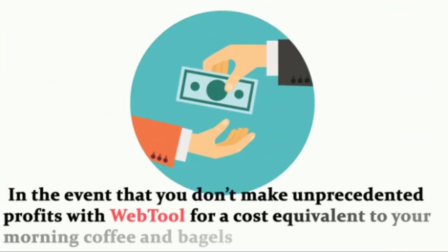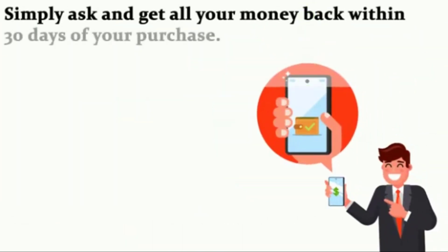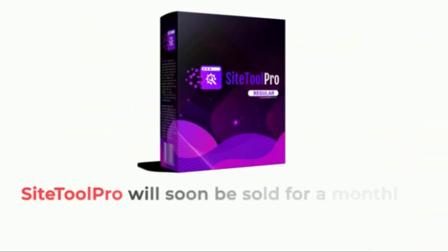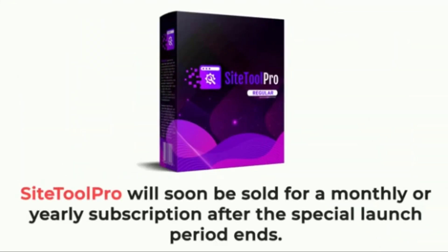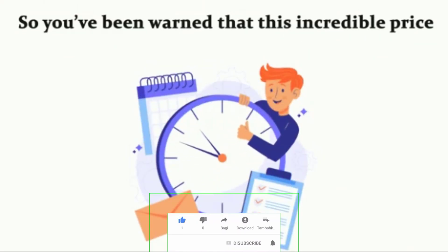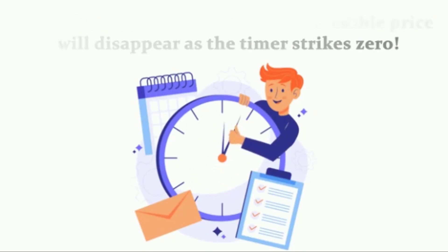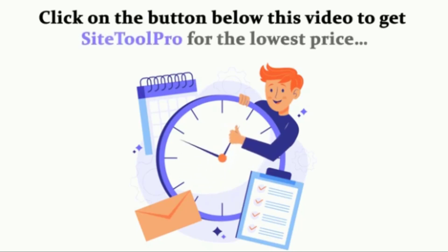It's really about embracing the change as quickly as possible to profit like never before. In the event that you don't make unprecedented profits, we assure you a complete refund — simply ask and get all your money back within 30 days of your purchase. Site Tool Pro will soon be sold for a monthly or yearly subscription, but if you buy now you can access it for a one-time only low price. Click the button below this video to get Site Tool Pro for the lowest price. We're excited to see you inside!